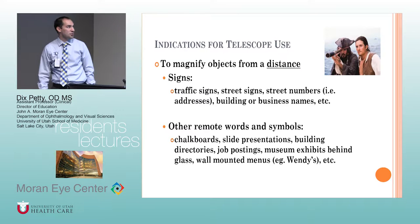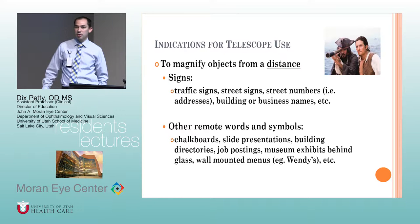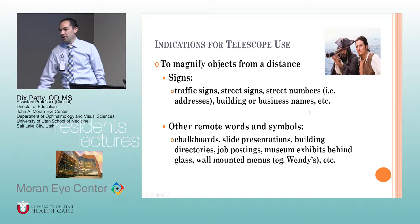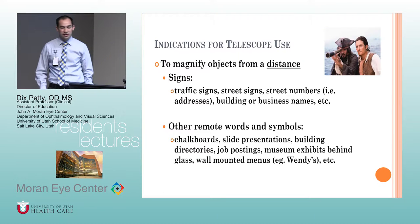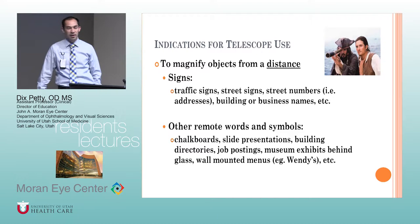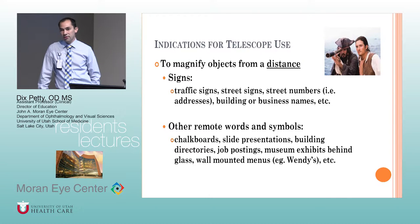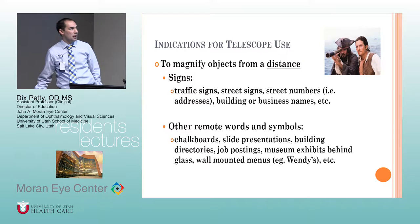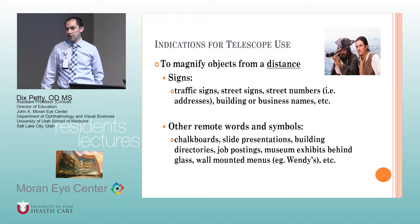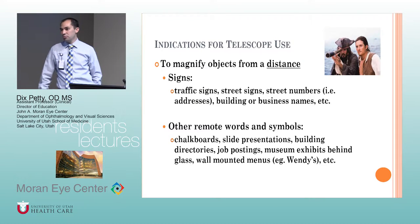Why do we use telescopes? Typically we think of stargazing or pirates looking at ships. Clinically, they're used in low vision. People with severe macular degeneration whose acuity is poor can use a telescope to increase the apparent size of letters — street signs, menus, buildings. They're also used in classrooms; at Ohio State's low vision clinic, we fit telescopes for students to use during lectures.